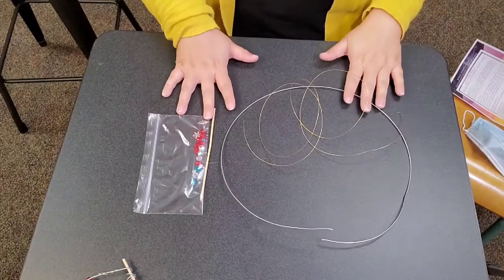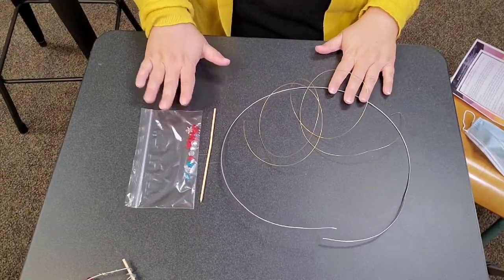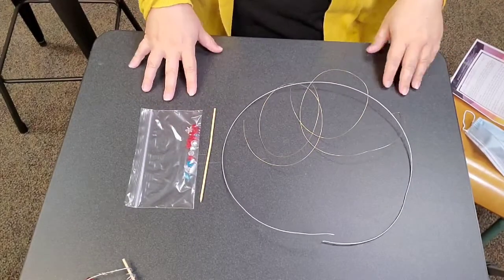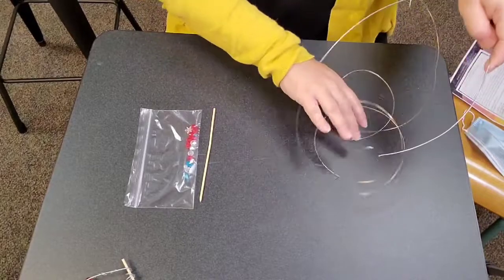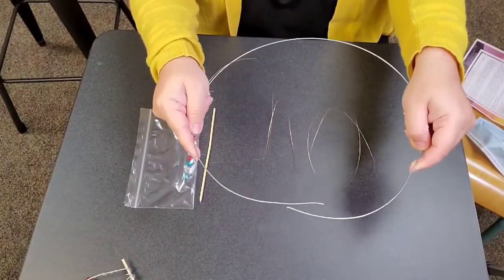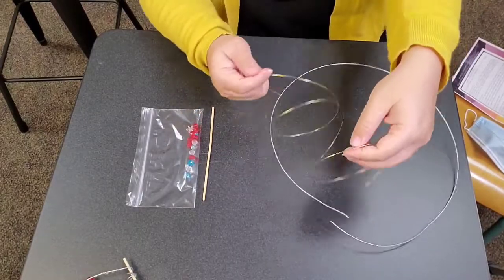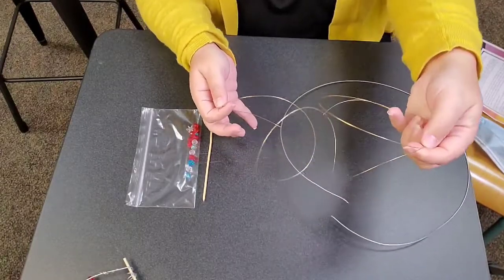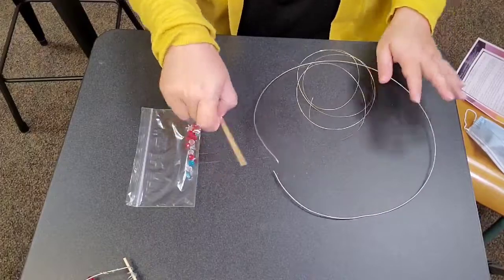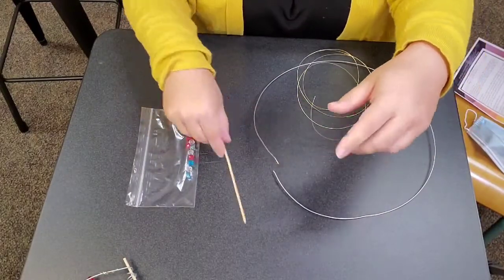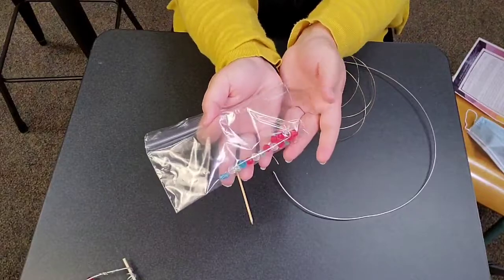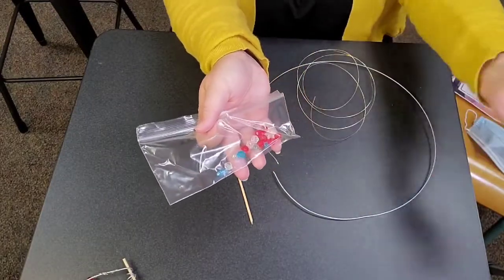I just opened up my hummingbird craft kit so you can go ahead and do that now. And what you should have is a large silver wire which is a little bit more heavy duty, a thinner spirally gold wire, your wooden dowel, and a baggie of decorative beads.